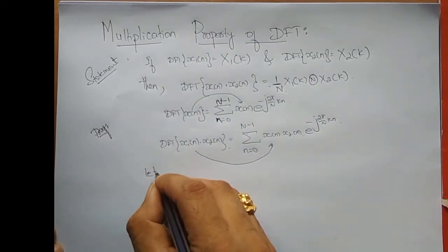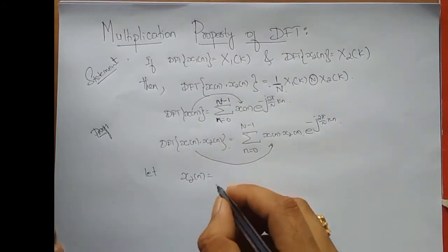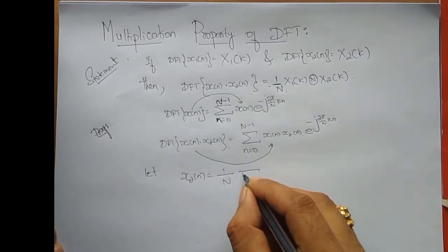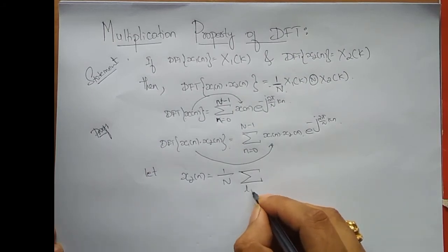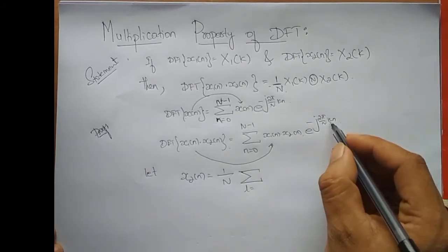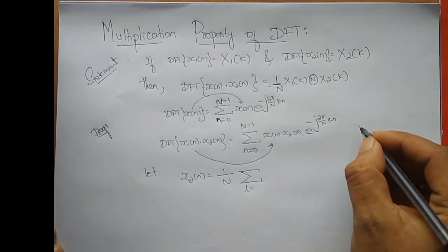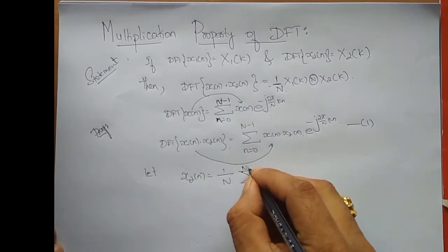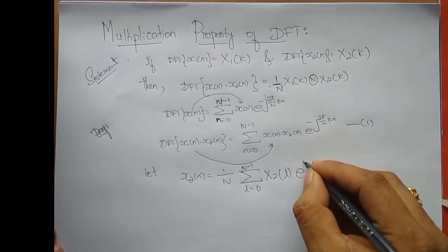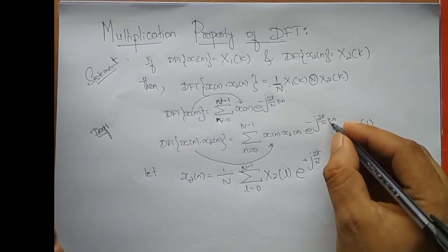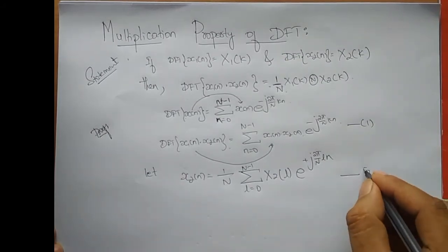What we do is define x2(n) using the IDFT equation. What is x2(n) in terms of the IDFT equation? It is 1/N into summation. I am not going to use k but some other variable — I will use l — because k is already been used and later I have to substitute this equation into equation 1. So: l varying from 0 to N minus 1 of X2(l) · e^(+j2π/N · l · n). Let me call this equation number 2.